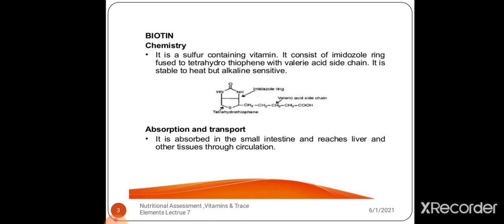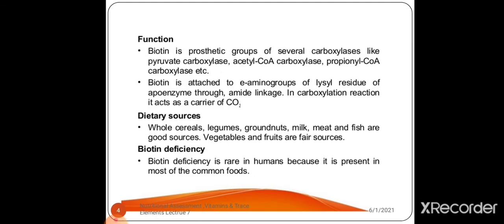Absorption and transport: biotin is absorbed in the small intestine and reaches the liver and other tissues through circulation. Function of biotin: biotin is a prosthetic group of several carboxylases like pyruvate carboxylase, acetyl CoA carboxylase, and propionyl CoA carboxylase.